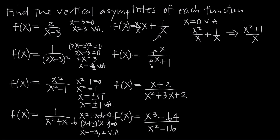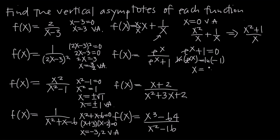What about the function e to the x divided by e to the x plus 1? We'll take the denominator e to the x plus 1 and set it equal to 0. Subtracting 1 from both sides gives e to the x equals negative 1. To solve for x, we take the natural log of both sides, which cancels the exponential function, leaving x equals the natural log of negative 1. But we can't take the natural log of negative 1 — that itself is undefined — which means we can't solve for a real value of x. Because there's no solution to this equation, there is no vertical asymptote for this function. When you get to an equation you can't solve, that means there's no vertical asymptote.